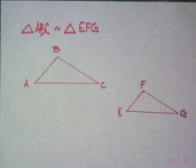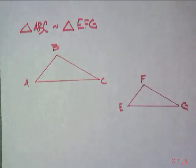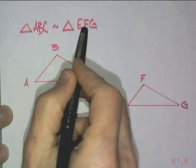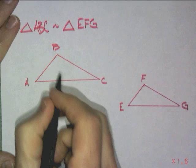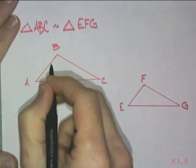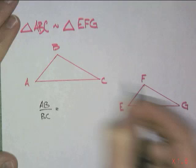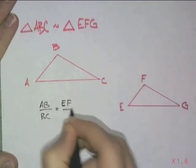Now let's talk about the attributes of similar triangles. I'm giving two triangles which are similar: triangle ABC is similar to triangle AFG. Because they are similar, their angles must be congruent and the sides are proportional. So AB compared to BC is going to be a ratio equal to EF compared to FG.